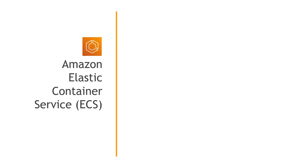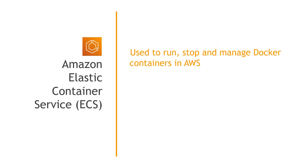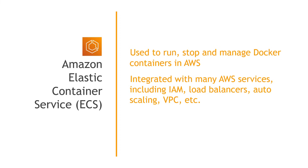Now let's talk about the container services in AWS. First, we have the Elastic Container Service or ECS — not to be confused with EC2, the Elastic Compute Cloud. ECS is used to run, stop, and manage Docker containers in AWS. It integrates with a lot of other services like IAM, load balancers, auto scaling, virtual private cloud, and more. It's proprietary, or created by AWS.